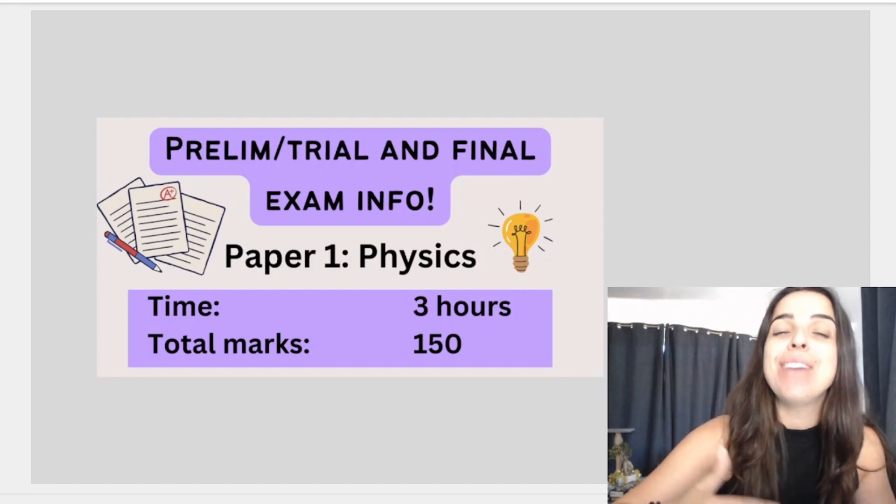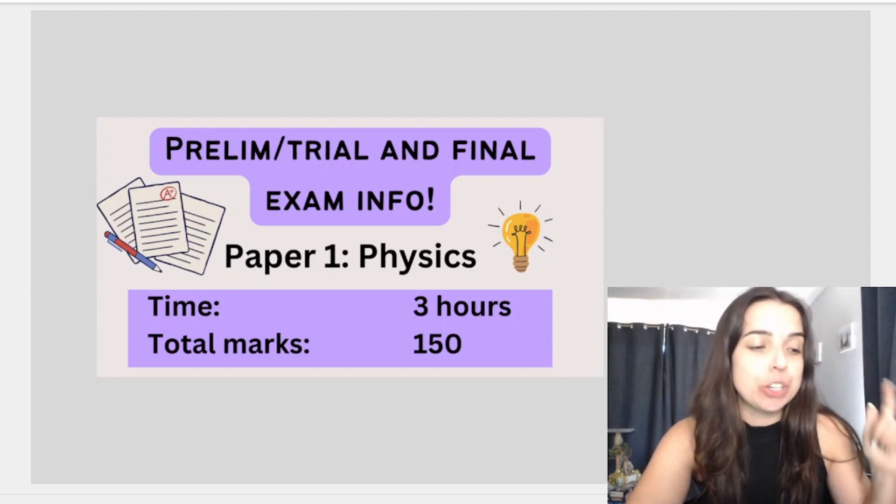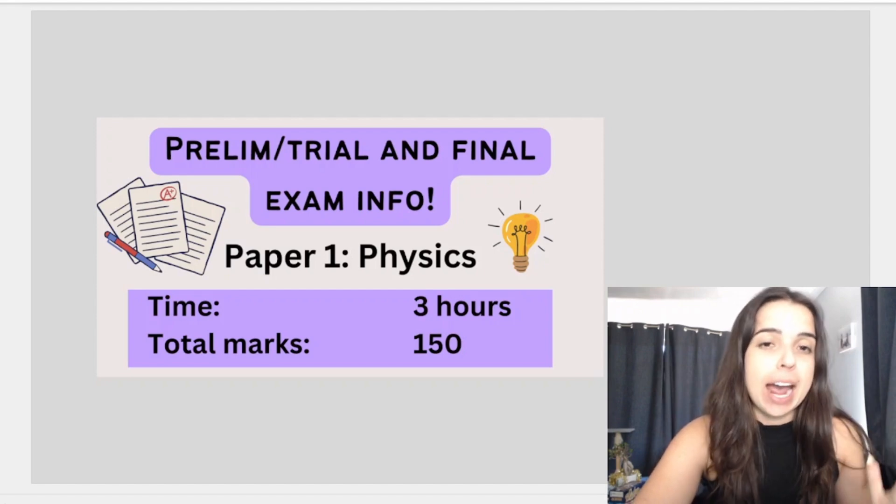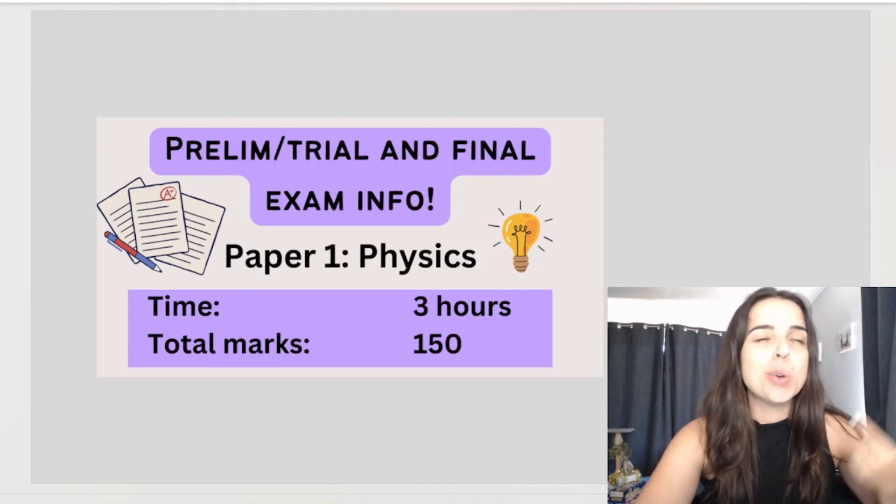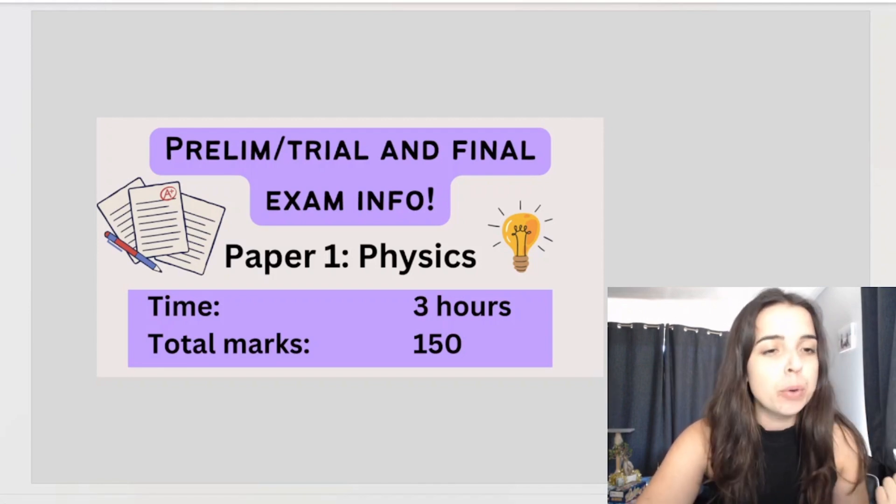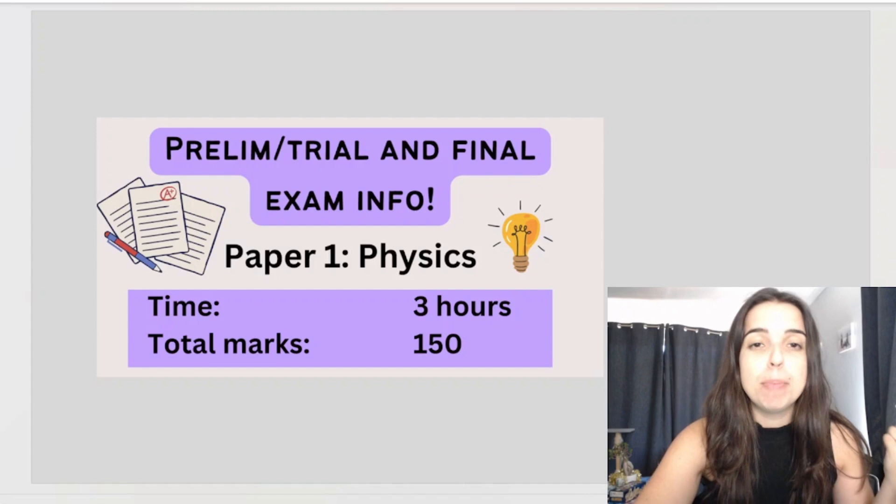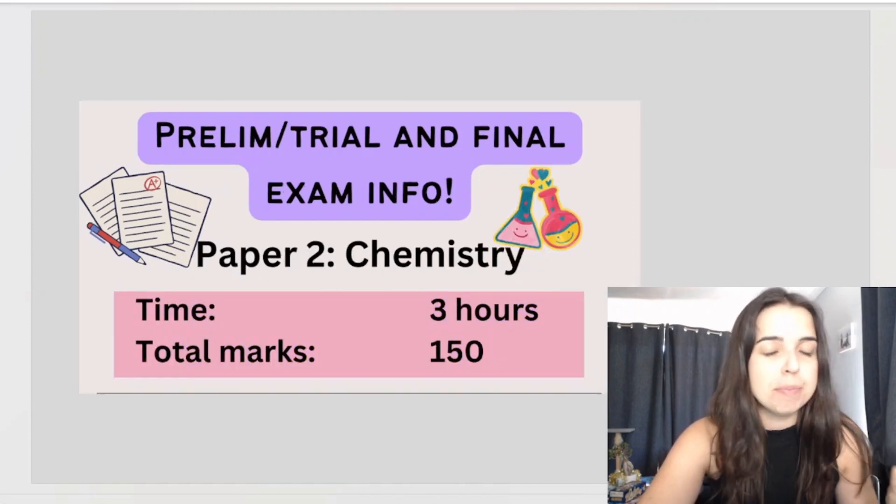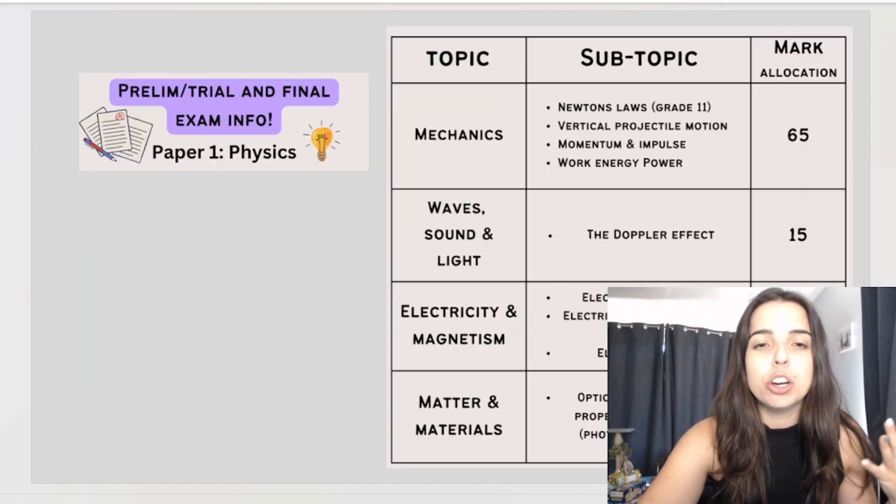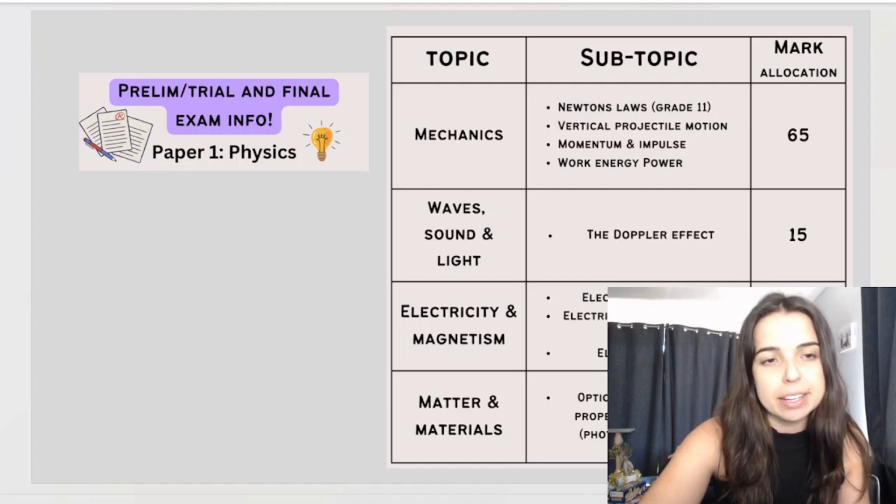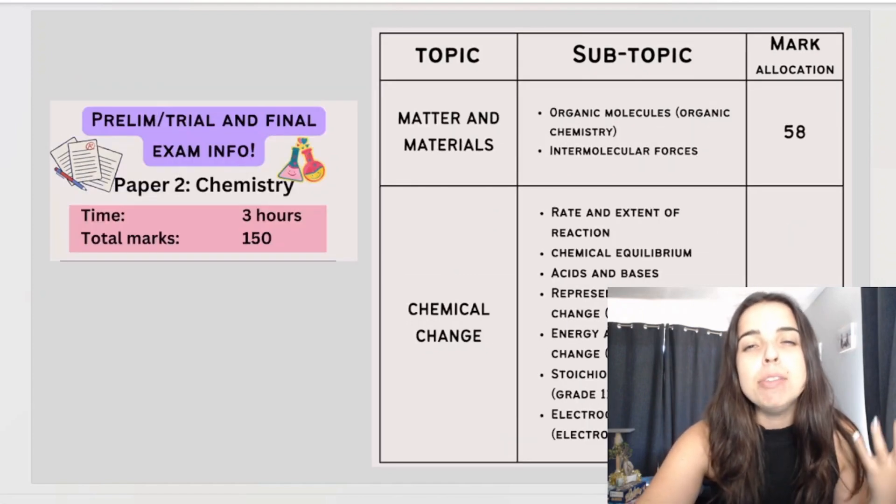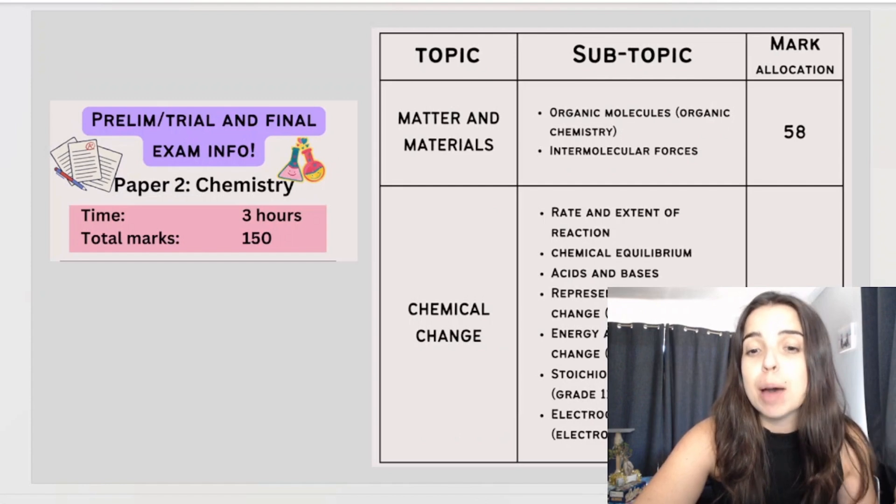We also have some prelim or trial and final exam information in the document which is available on my website. Basically you need to know that you write two papers. Paper one is always physics, three hours, 150 marks. Paper two, chemistry, same thing, three hours, 150 marks. The document breaks down what you can expect in each paper and the mark allocations for each subtopic.